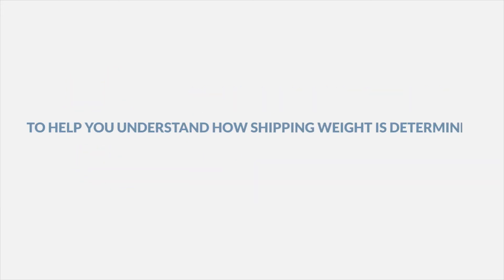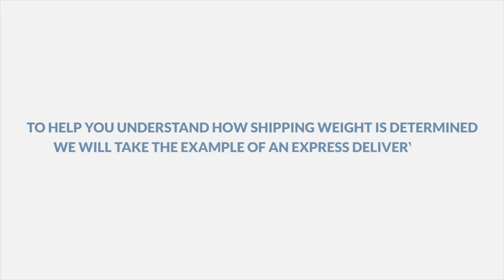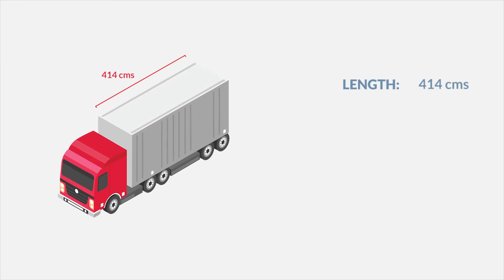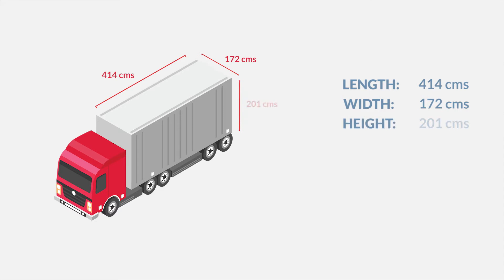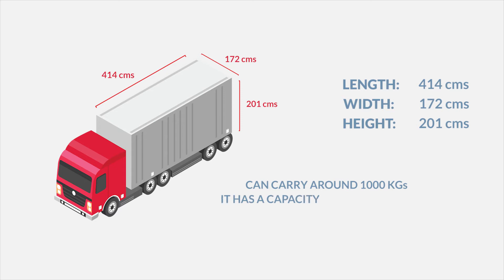To help you understand how shipping weight is determined, we will take an example of the express delivery van. A typical van has a load length of 414 cm, width capacity of 172 cm, internal height of 201 cm, and can carry around 1,000 kg. This means it has a total cubic capacity of around 14 cubic meters.